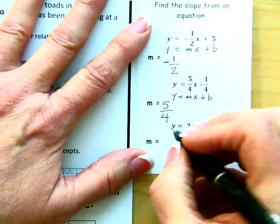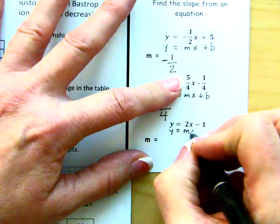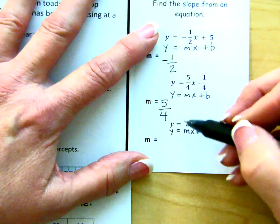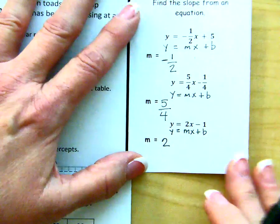For this third example, y equals mx plus b. The 2 is the number in front of the x, so our slope is simply 2.